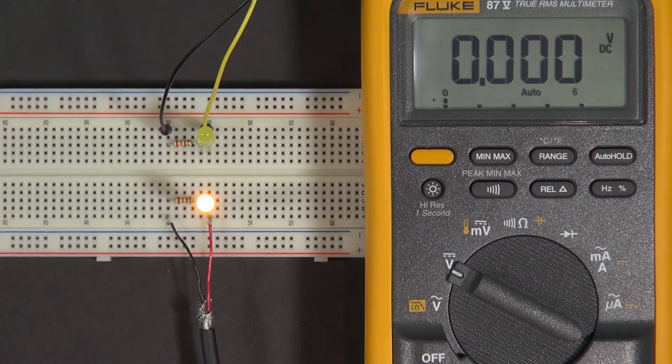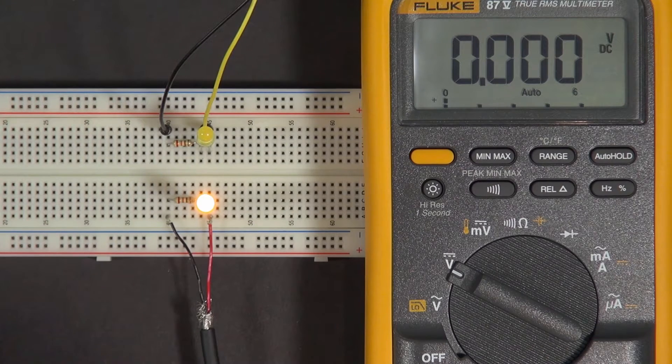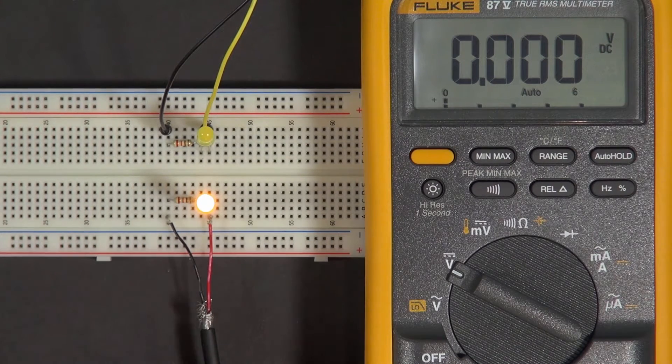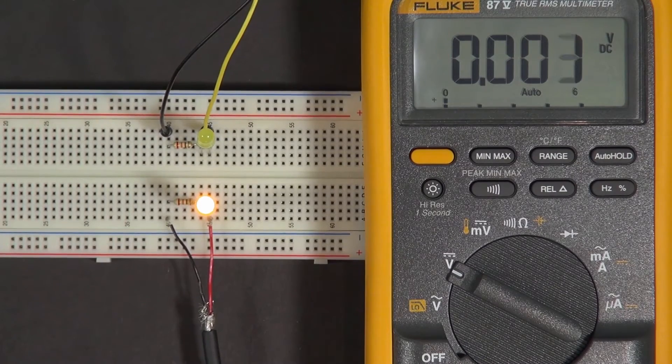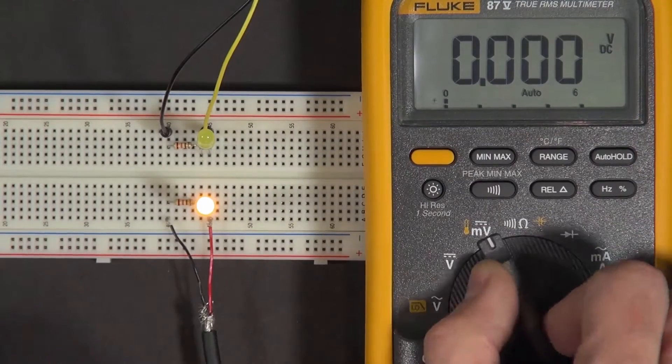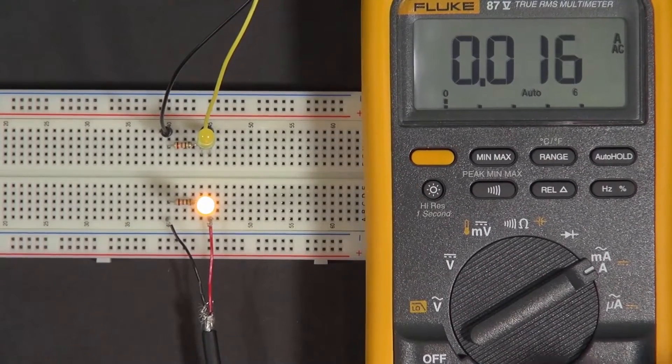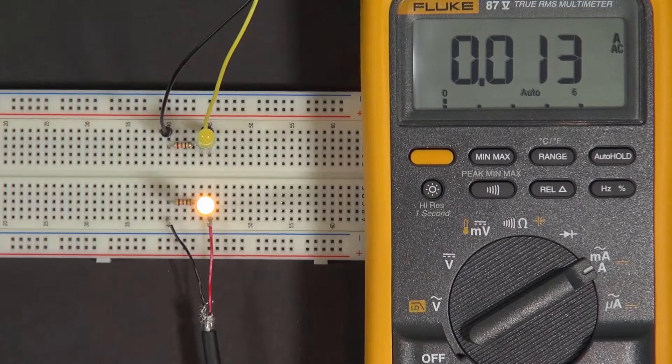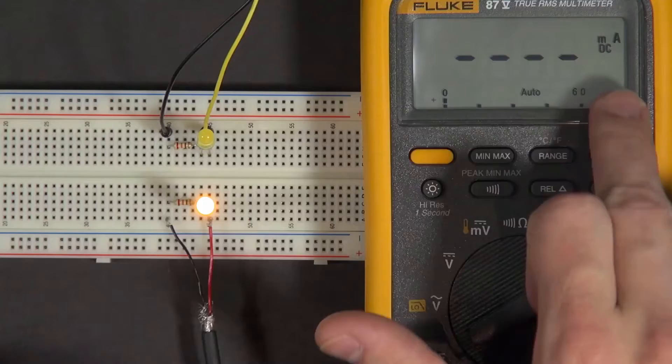If voltage is the same and resistance is the same, the next thing to check out might be the current. How many amps are actually flowing through this circuit? We can do that with our multimeter. We can set it to measure amps, and I need to move the power lead over here. We want to measure milliamps, we want DC.